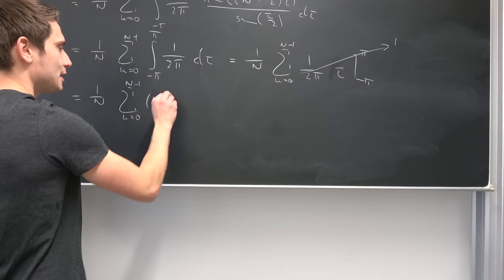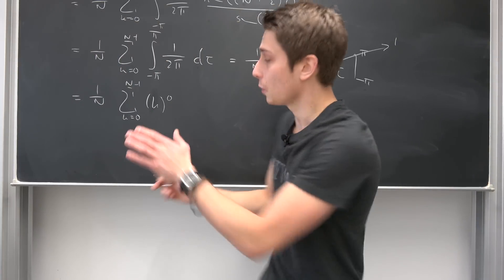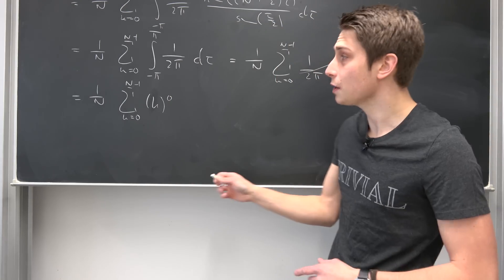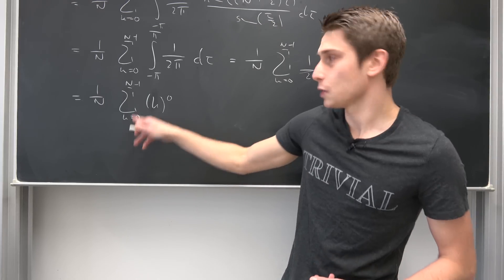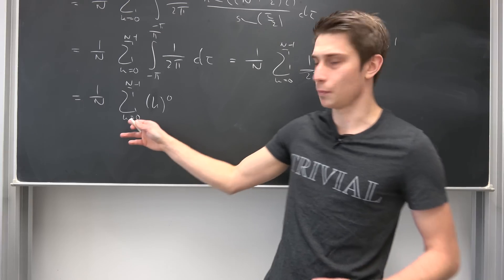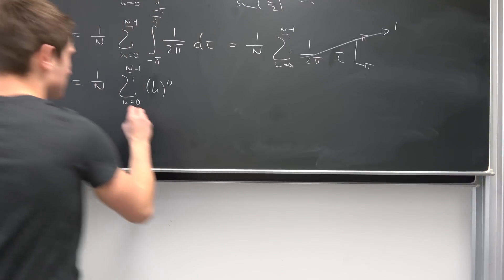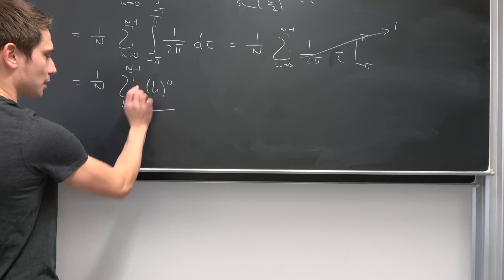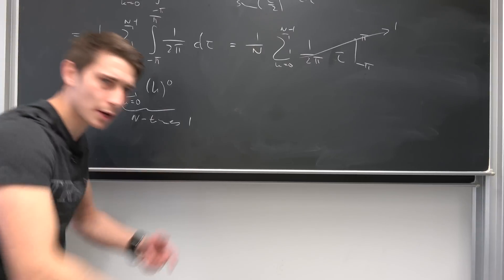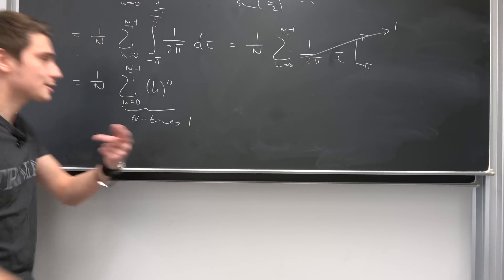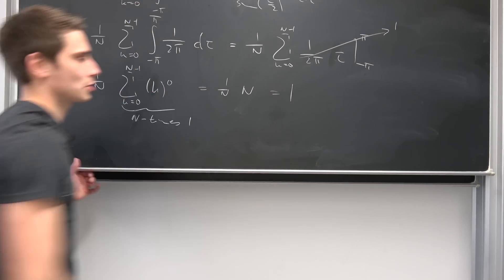So we have just 1 over n times this finite sum of 1. Some people don't know how to deal with stuff like this — just keep in mind: a 1 is nothing but k to the 0th power. So if we sum from 0 to n minus 1, that's 1 plus 1 plus 1; you can shift the index from k equals 1 to n. Those overall are just n terms, meaning we get 1 over n times n, which is 1.